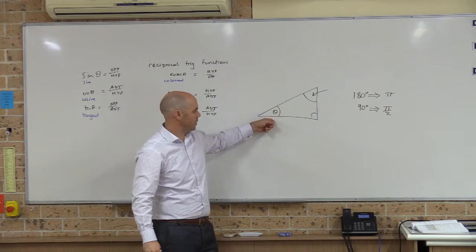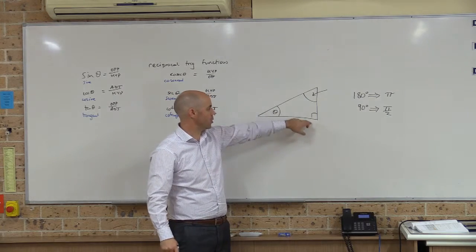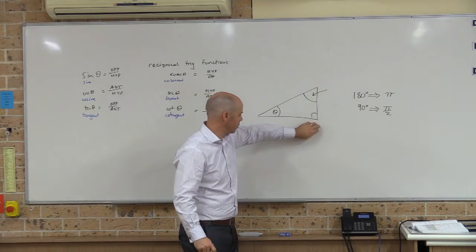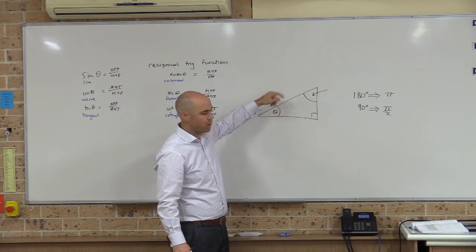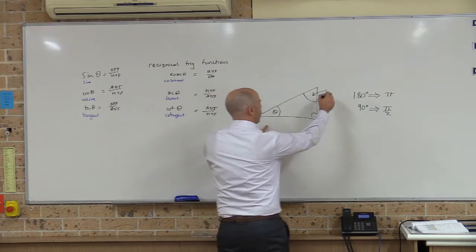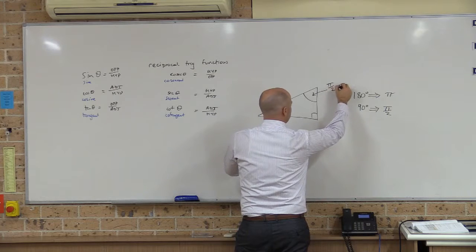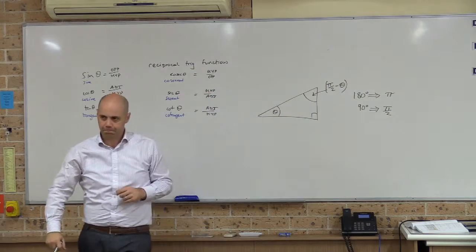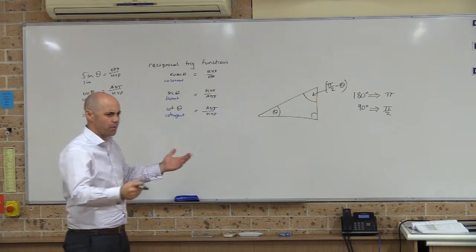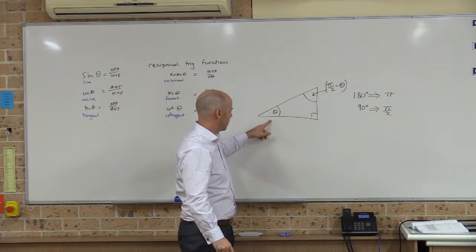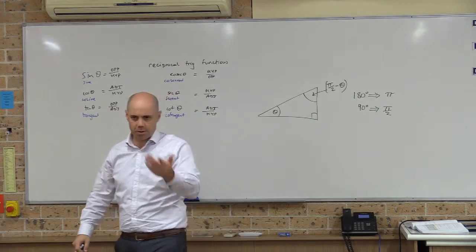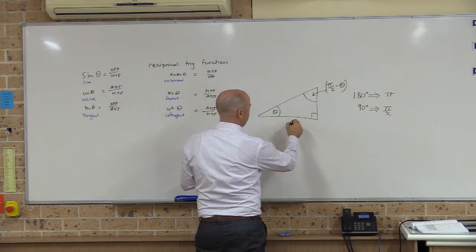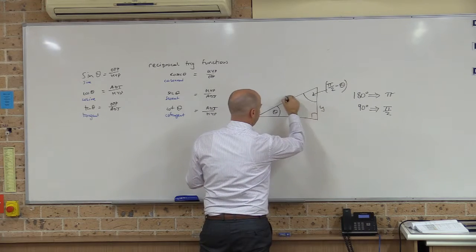So if this angle is theta, that right angle is pi over 2, and these two angles must add up to pi over 2 radians. So if this is theta, we can call the other one pi over 2 minus theta. In degrees, that's 90 minus theta. Let's label the sides: call them x, y, and z.